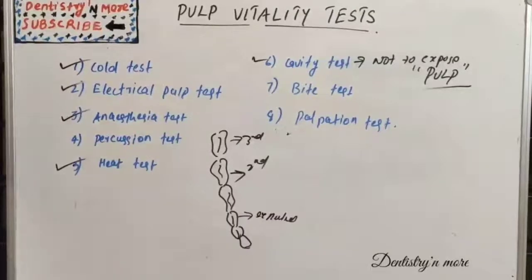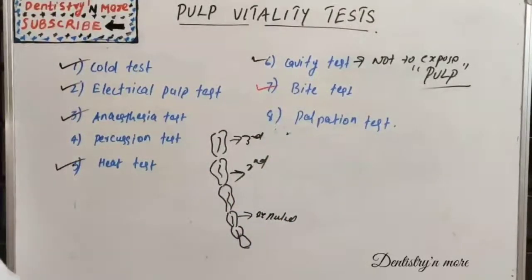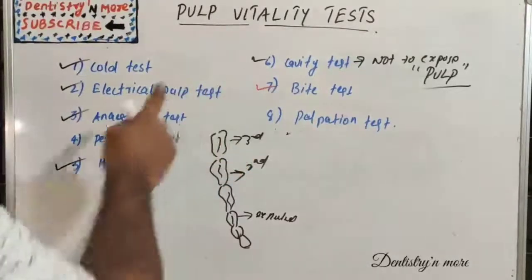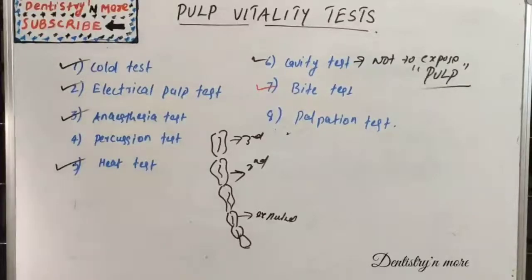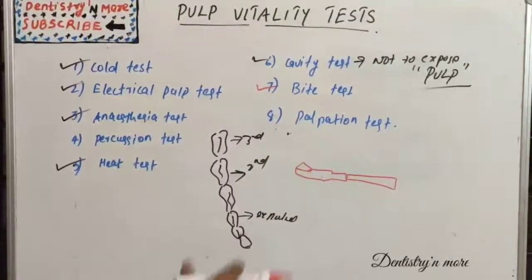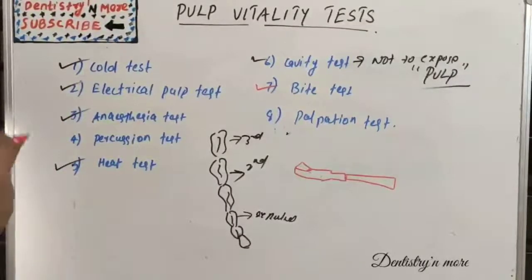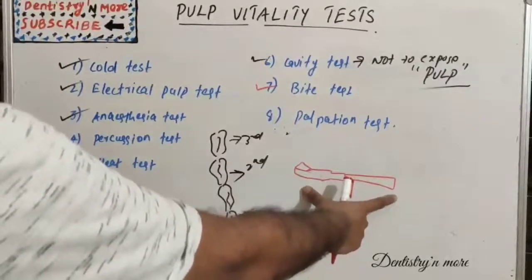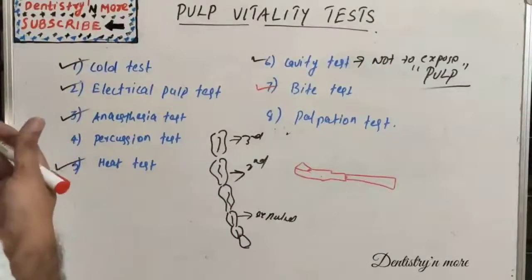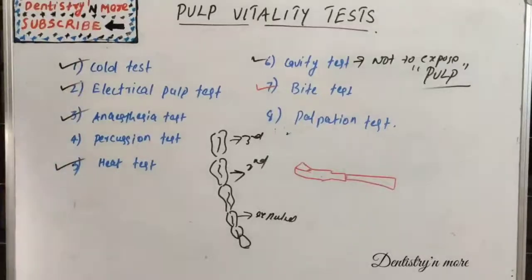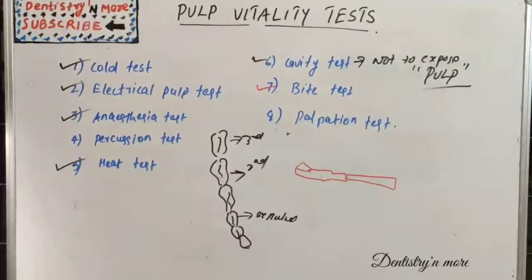Next we have the bite test, used when a patient complains of pain on mastication. The patient feels pain on biting if pulp necrosis has reached the periodontal space or periapical area, or if there is a vertical fracture in the tooth. To conduct this test, ask the patient to bite on a hard object such as a cotton roll, toothpick, or tooth slooth apparatus. If the patient reports pain, it indicates a vertical fracture or pulp infection that has reached the periodontal space or periapical area.